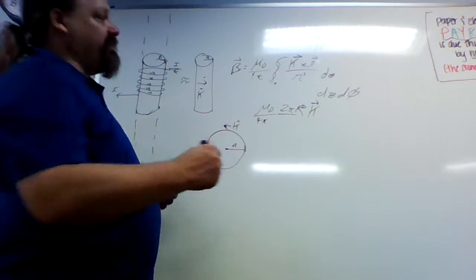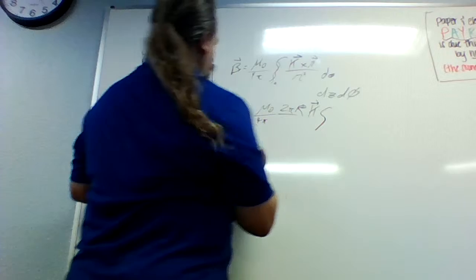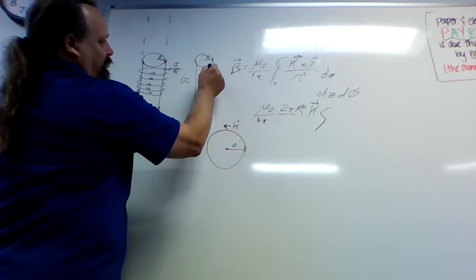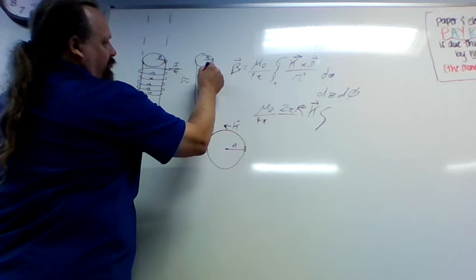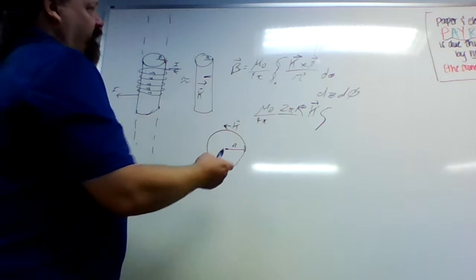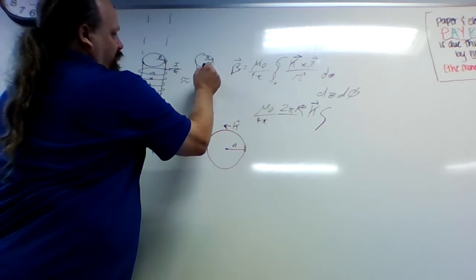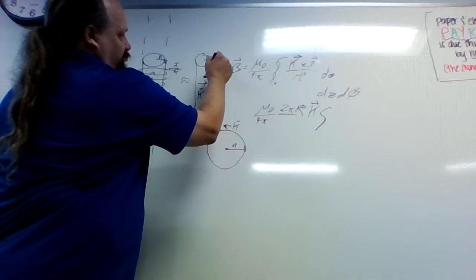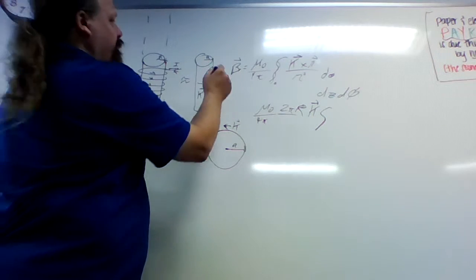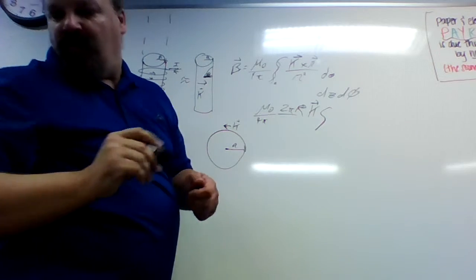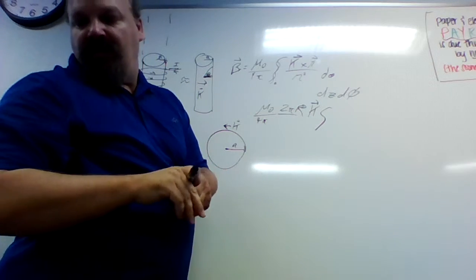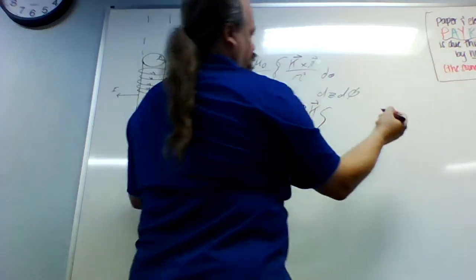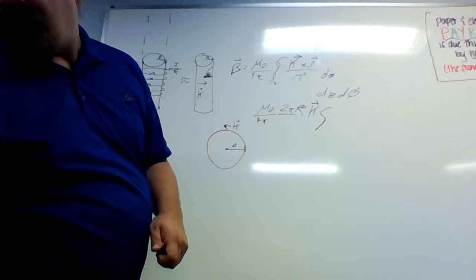So that leaves us with the integration of going up and down. So instead, we're going to switch our bounds. Instead of doing z, we're going to measure theta to the point along the wire.